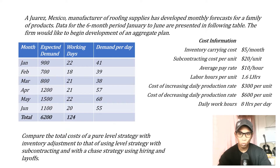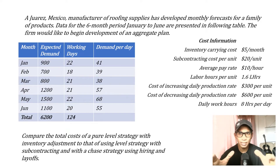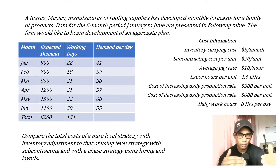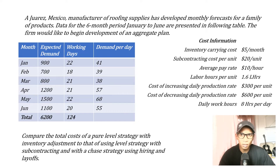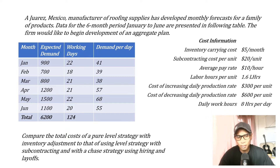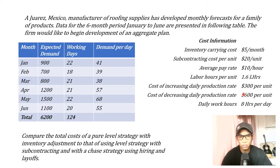Out of these three options, the one with the lowest total cost is the one we select — this is the hit-and-trial method. In the first option, the pure level strategy with inventory adjustment, we produce at a constant level throughout the entire 124 working days. When we have surplus production, we maintain inventory, and when demand exceeds production, we use that stored inventory. In the second case, the level strategy with subcontracting, we produce at the minimum demand level and subcontract the rest.